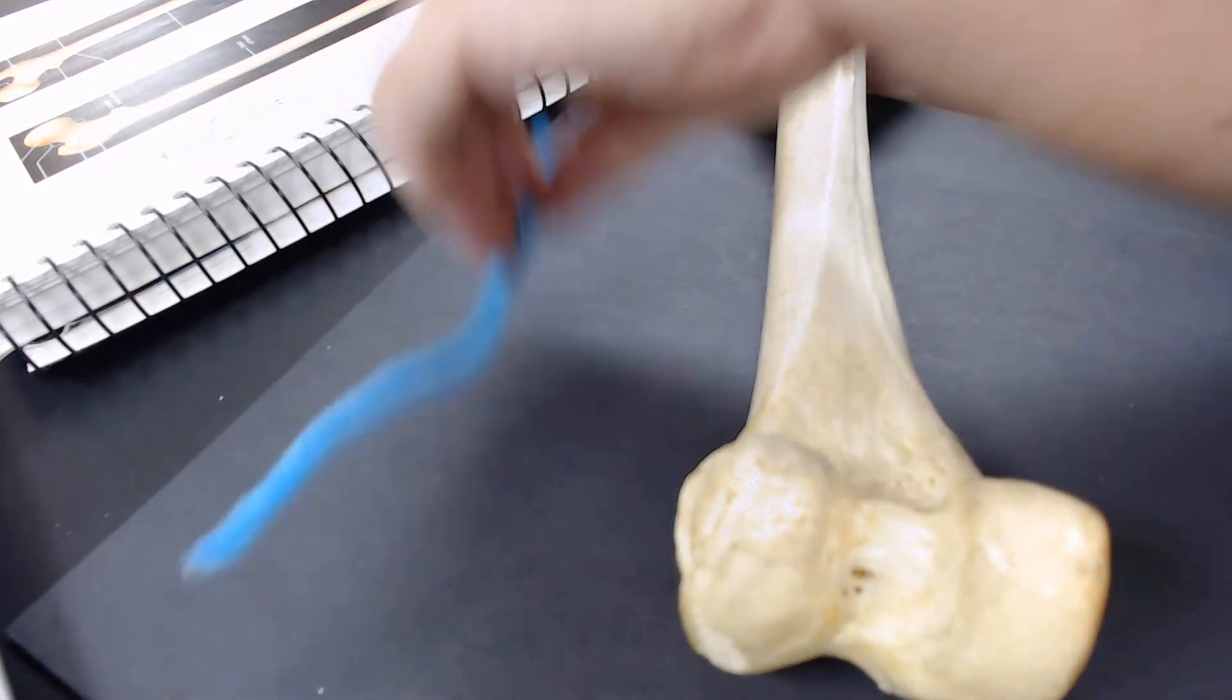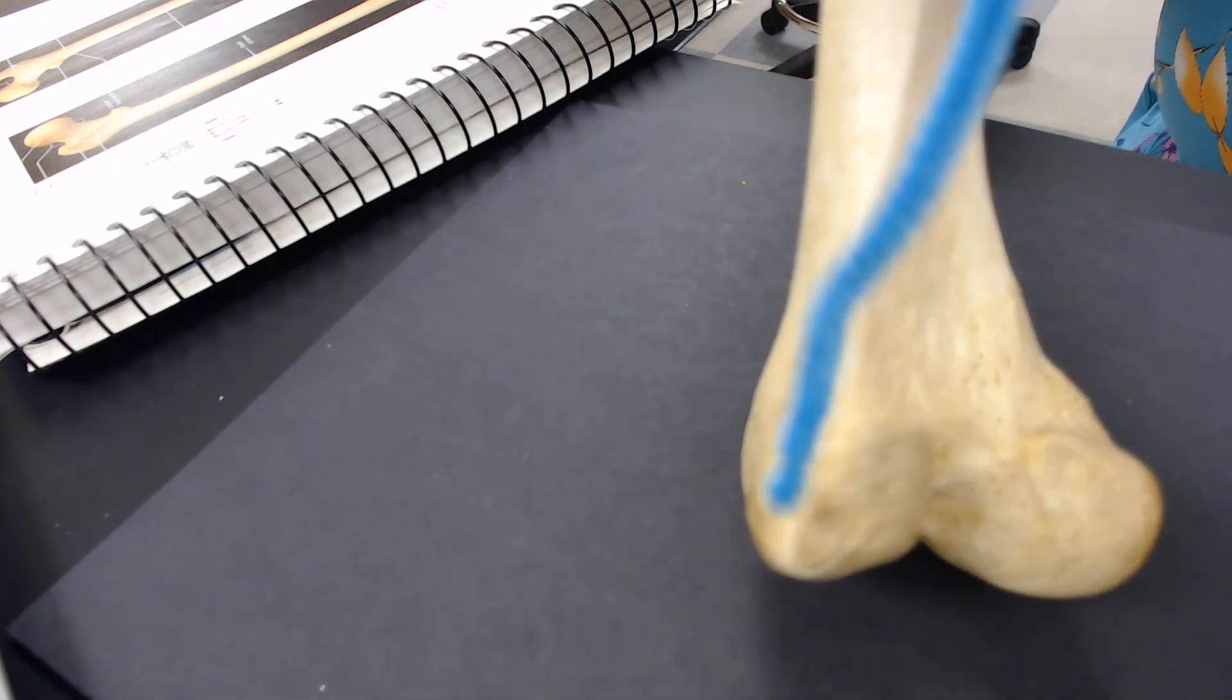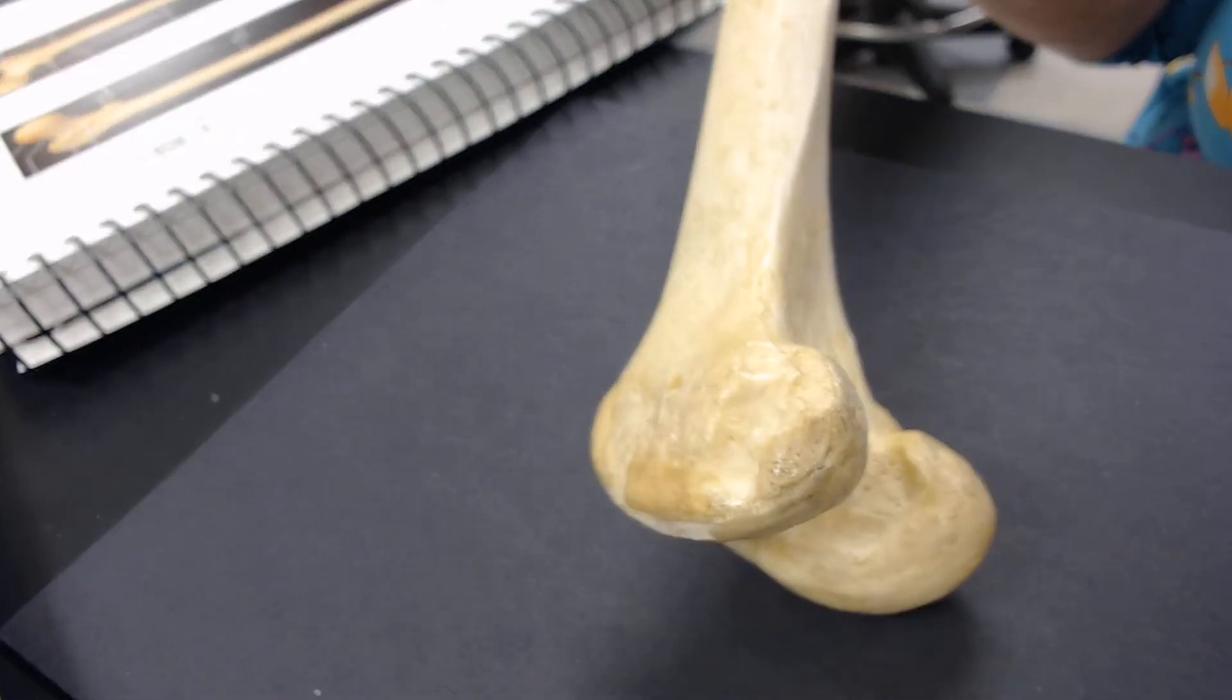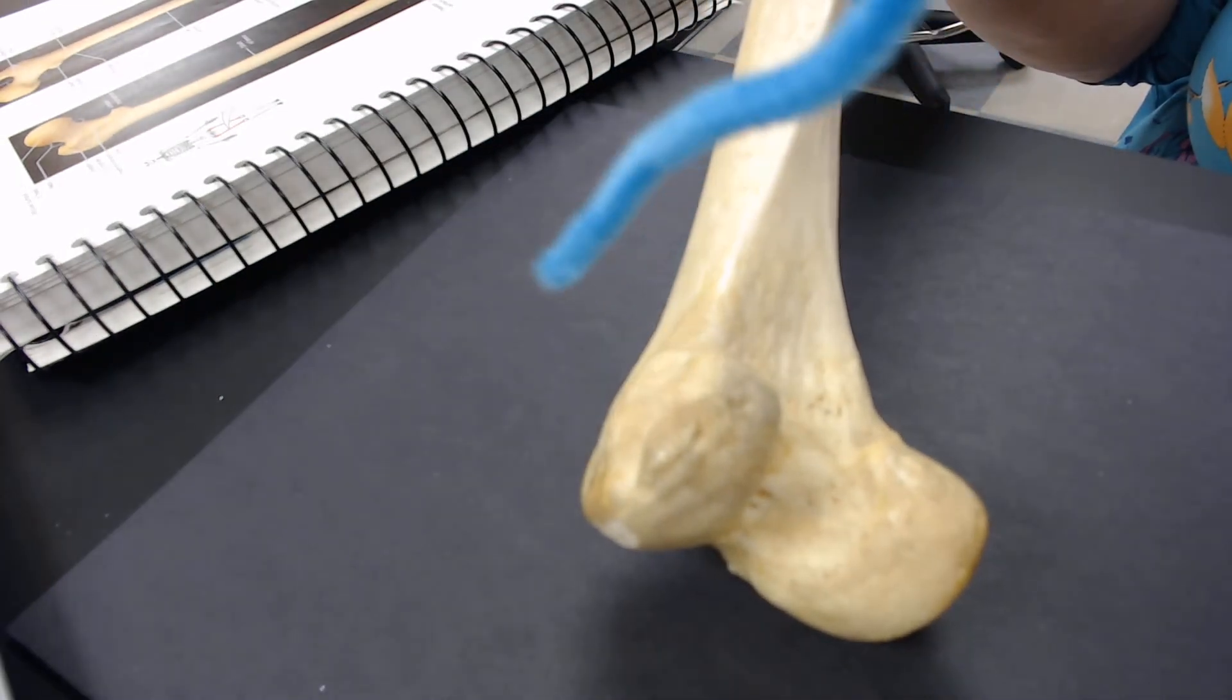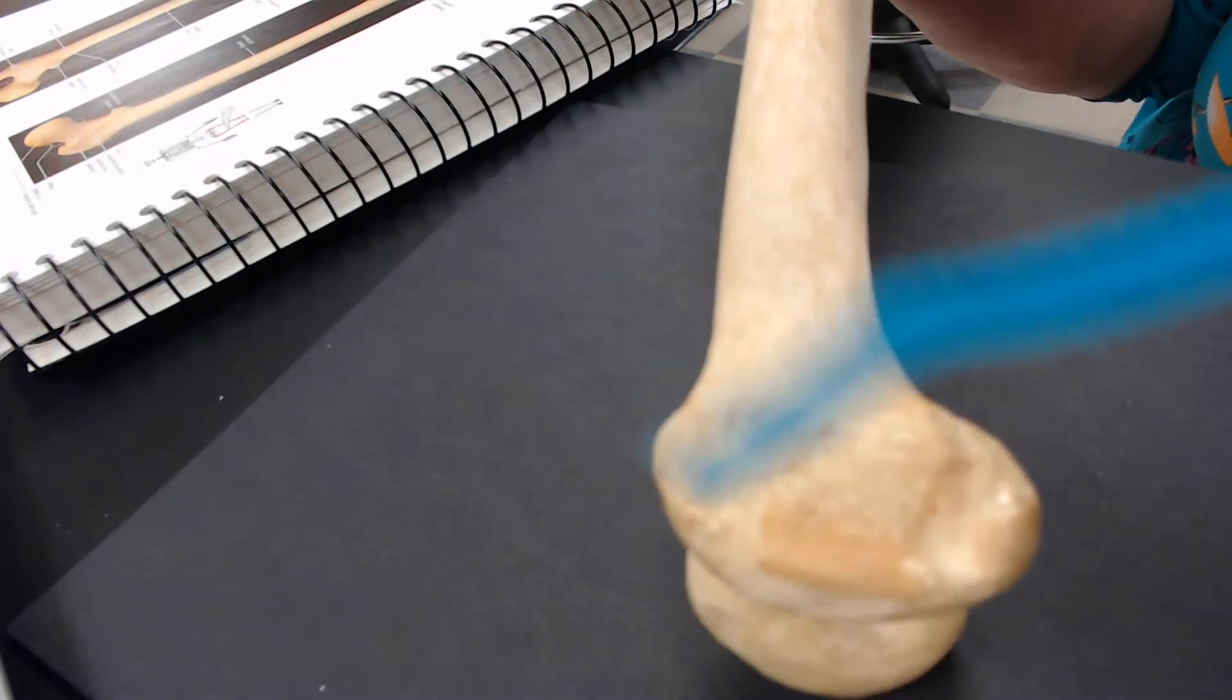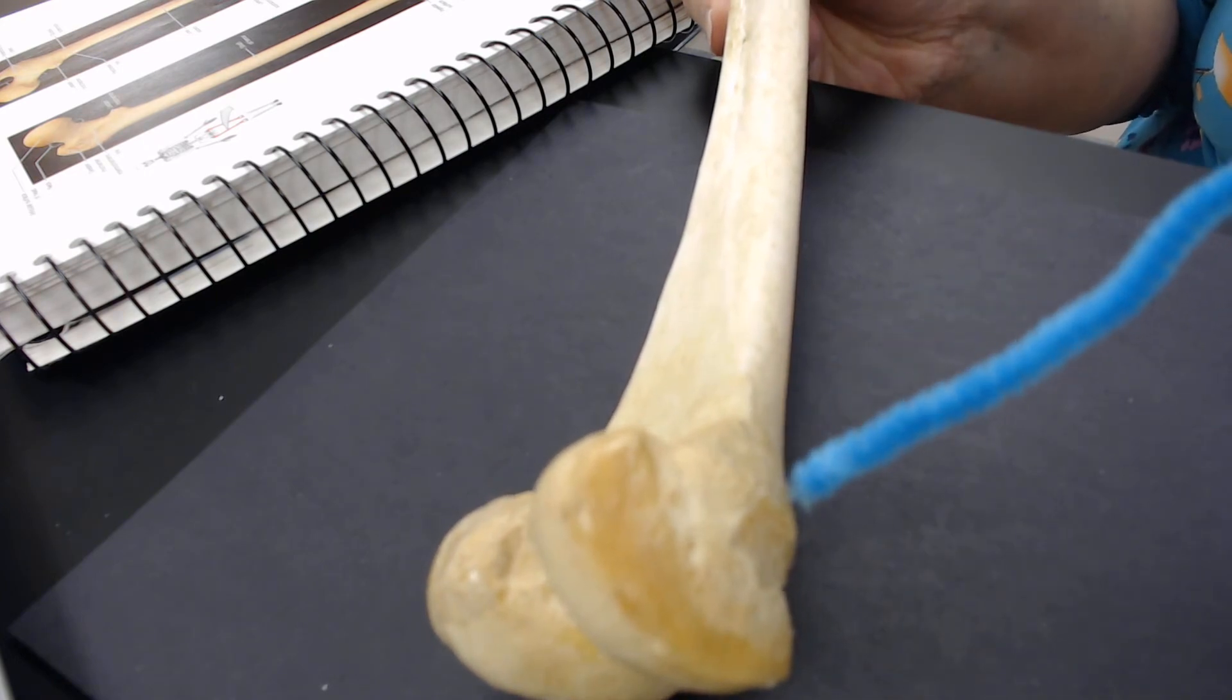Lateral epicondyle. Let's see if you get a better view of that. It's not nearly as big as the condyle, right? There's the lateral epicondyle. And then, the medial epicondyle.